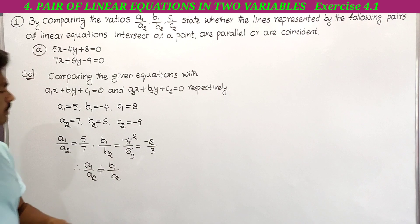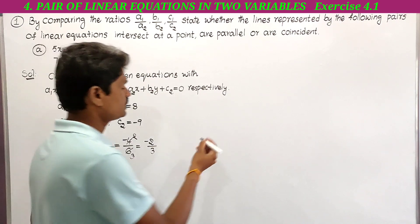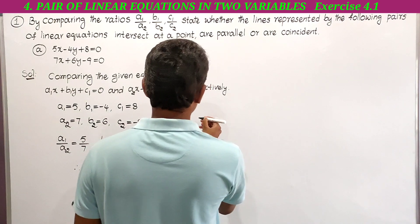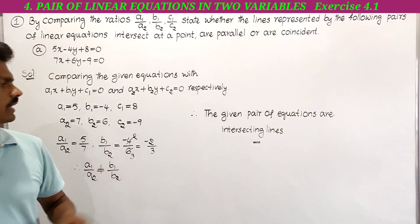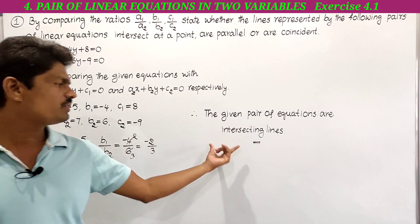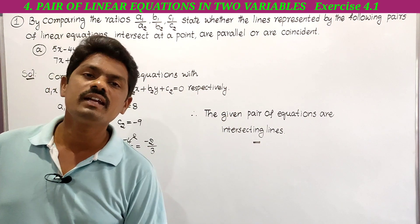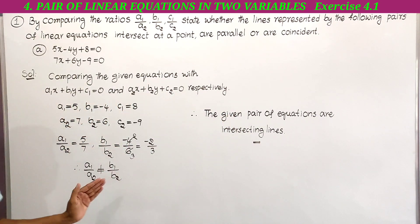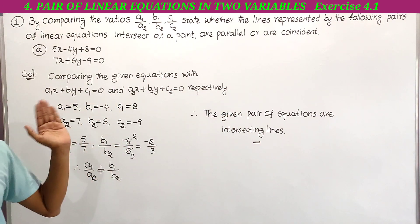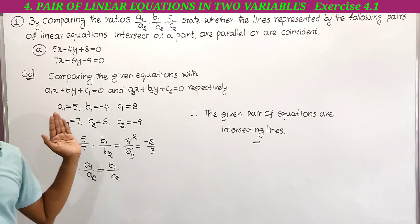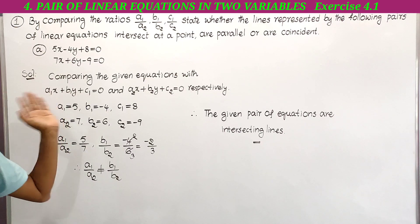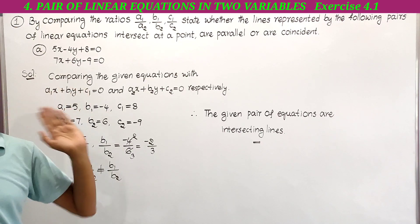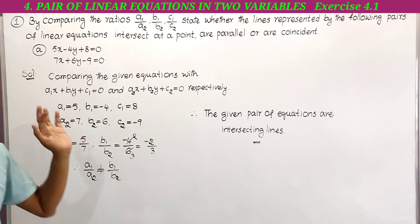Here a1 by a2 is not equal to b1 by b2, therefore the given pair of equations are intersecting lines. So like this we can say whether the given equations are intersecting, parallel, or coincident.